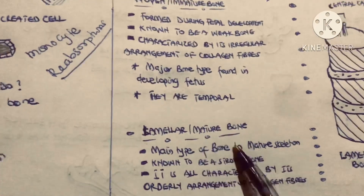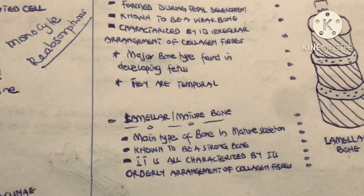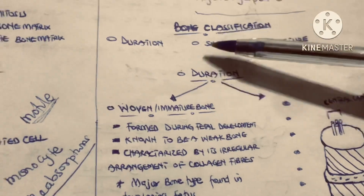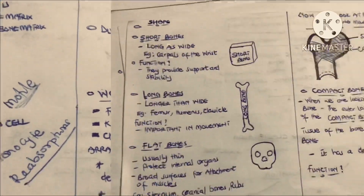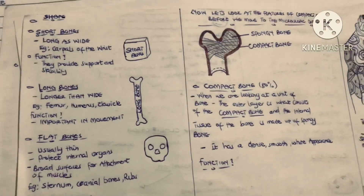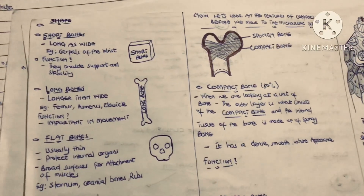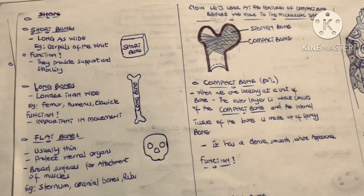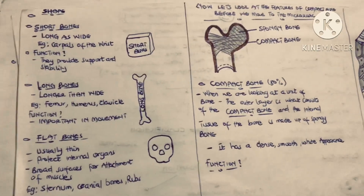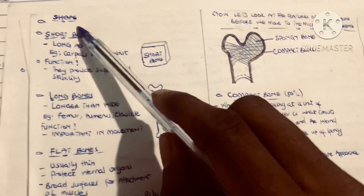Within the lamellar bone we have two types: the compact bone and the spongy bone, which we will look at later. Regarding the woven bone — also known as the immature bone — although formed during fetal development, it can also be found in adults during fractured or diseased states.